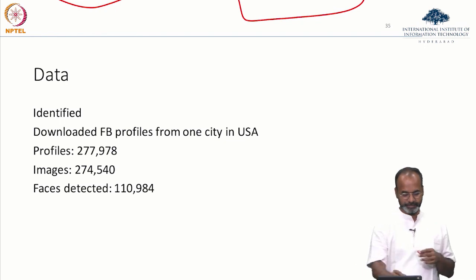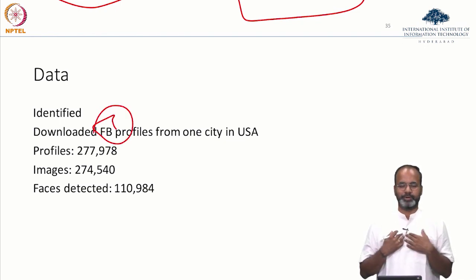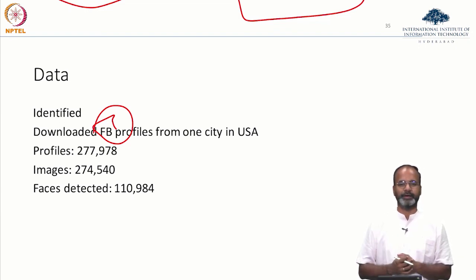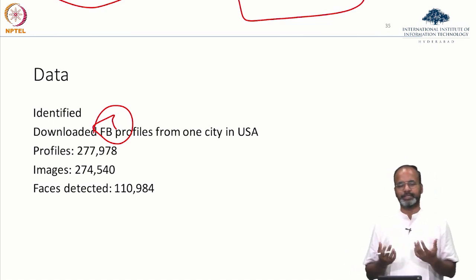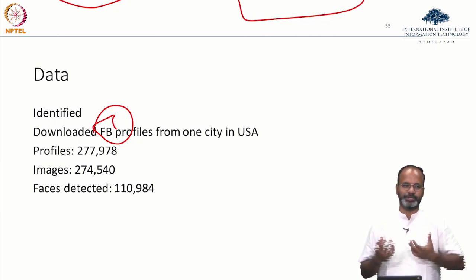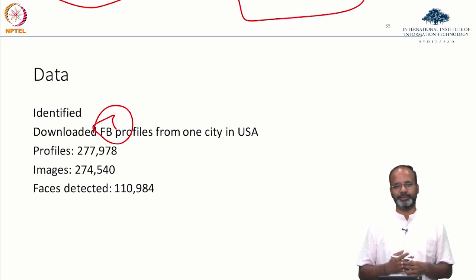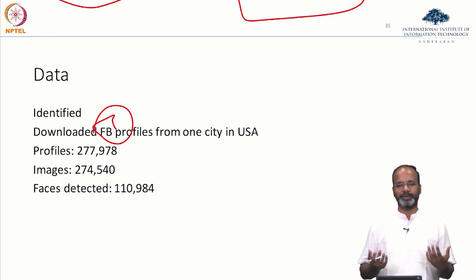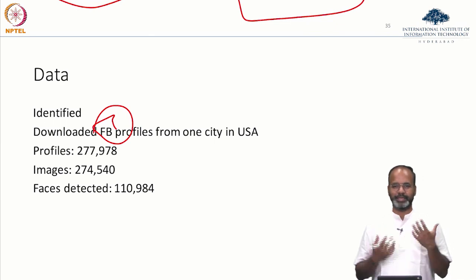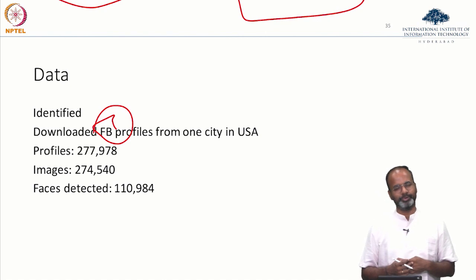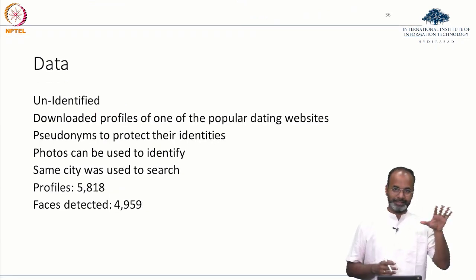This is the identified source because it is Facebook — Ponnurangam Kumaraguru is uploading the pictures and it is taken from my profile, so you can actually identify that PK is in this picture. Today this may be a little harder to do because collecting data from Facebook requires much more than what they did during 2004-2005, when you could easily give a city as input and get profiles from that city as output. Today you have to build an app and get approval from users.